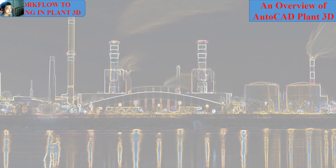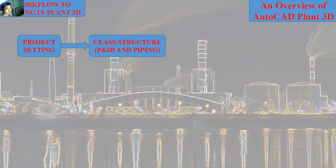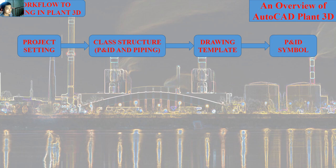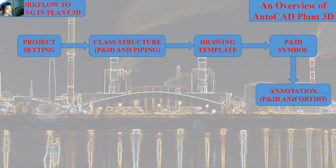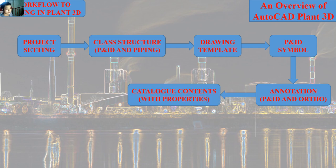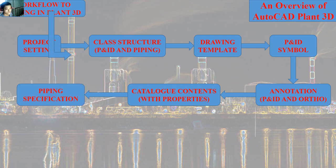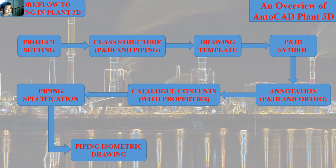Moving to the second topic in this video: the workflow for working with AutoCAD Plant 3D. The first thing we do is project setting, then class structure, then drawing template, then P&ID symbols, then annotation, then catalog content, then piping specification, and finally piping isometric drawing.